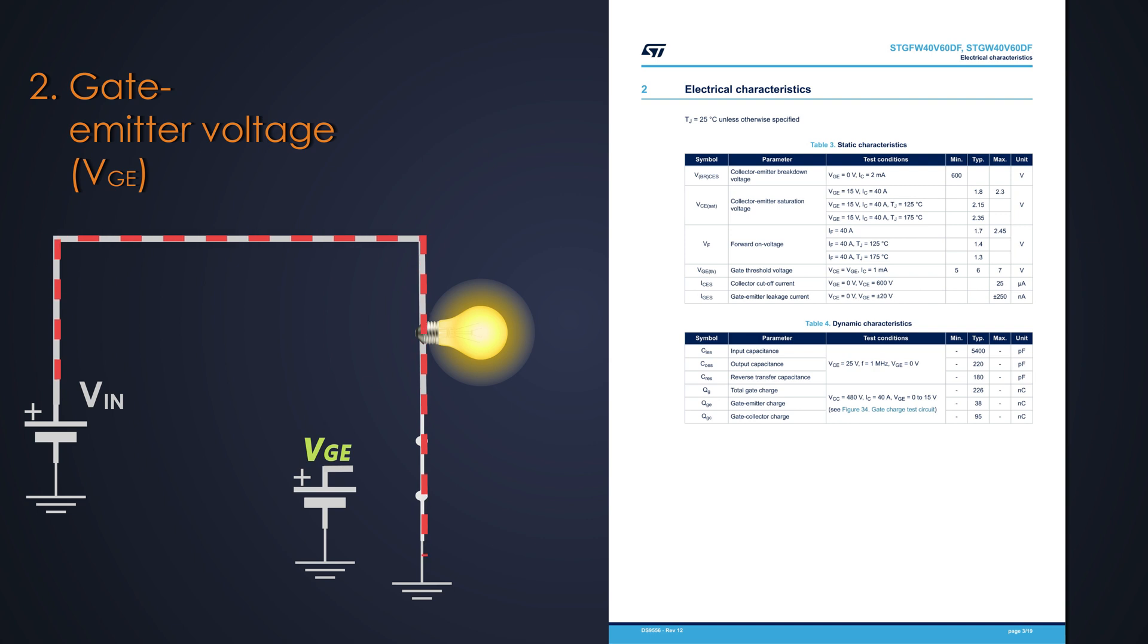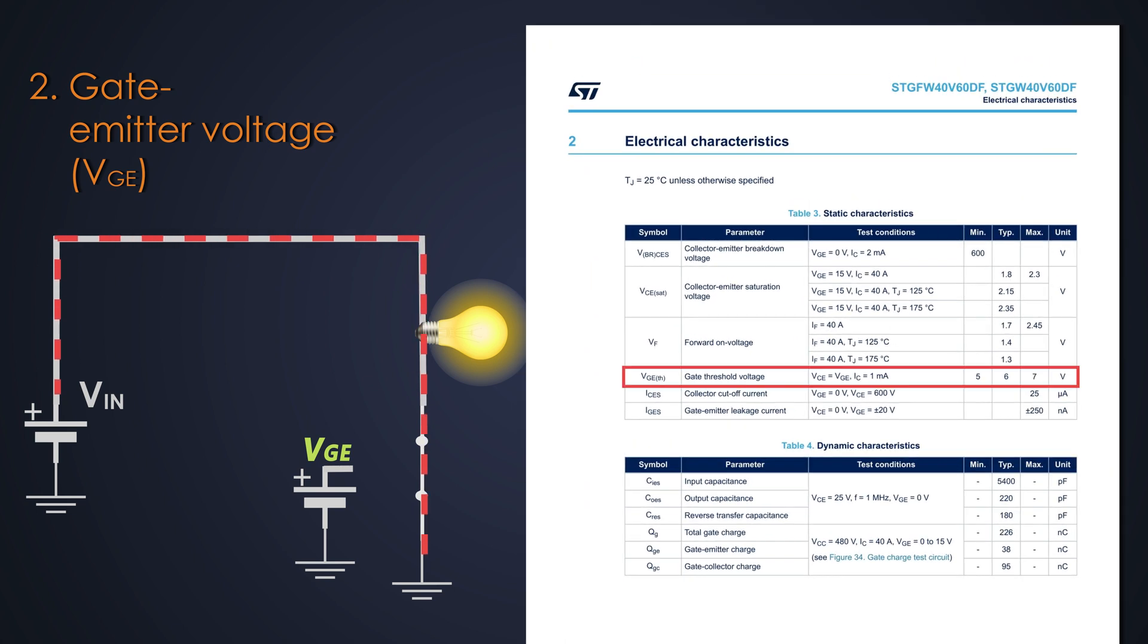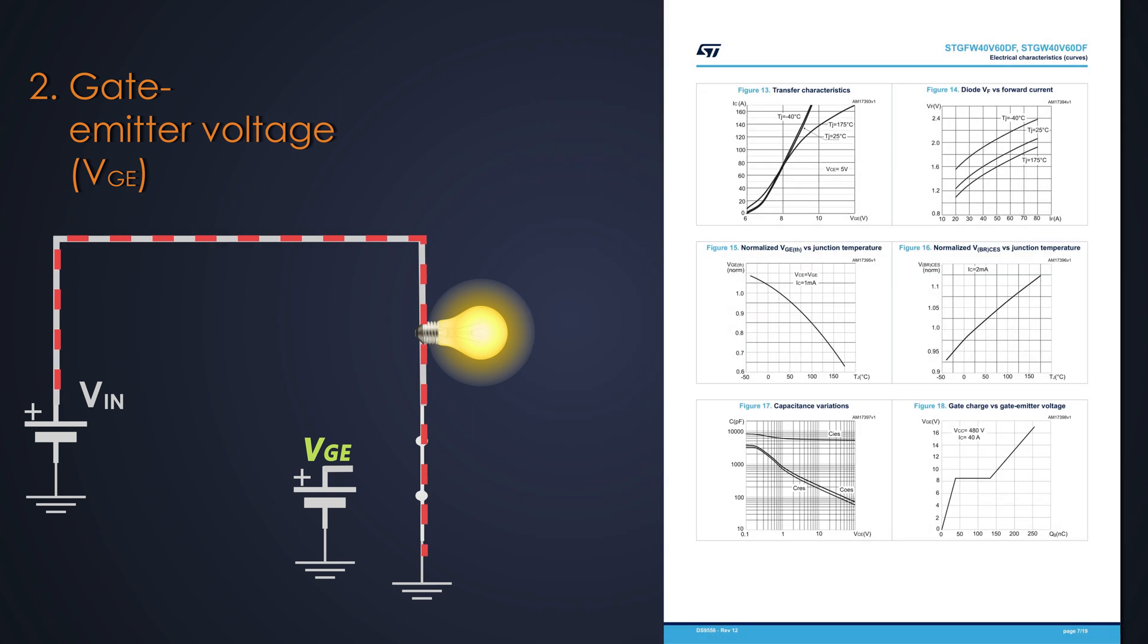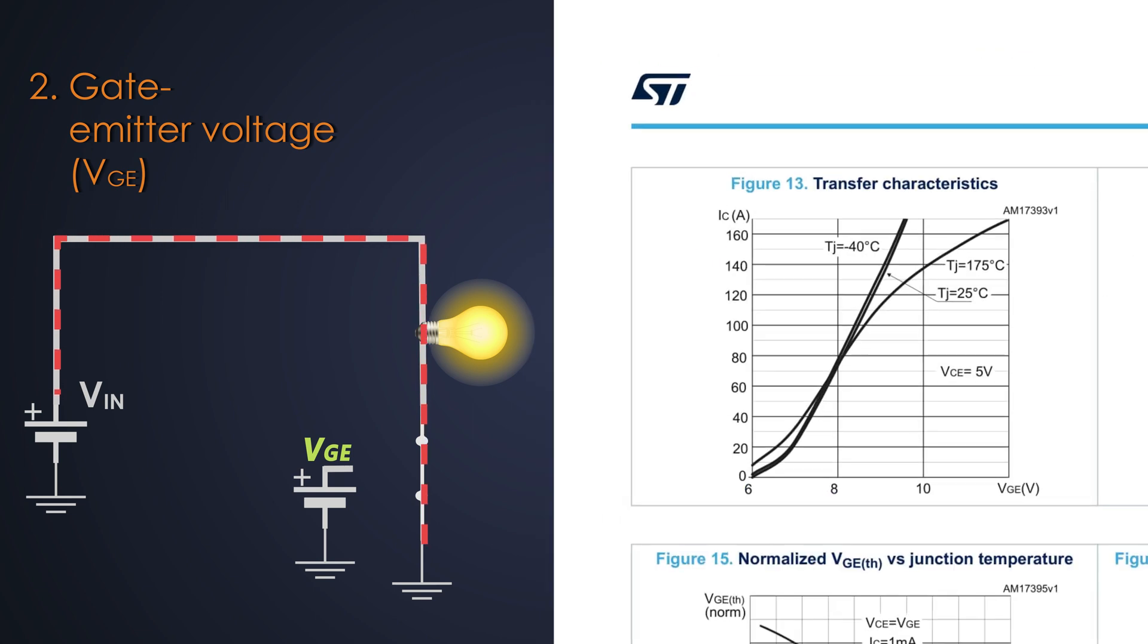For this IGBT, we need at least 5 volts to turn it on. This VGE depends upon the collector current which has to flow through the IGBT. If we see the datasheet and go to this graph, which is known as transfer characteristics of the IGBT, it shows the theoretical relationship between collector current and gate to emitter voltage. Let's say our load is of 80 amperes. For that, we need around 8 volts of gate to emitter voltage to turn on the IGBT.